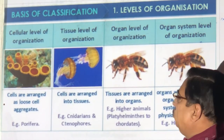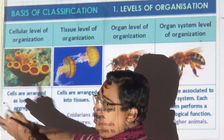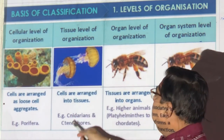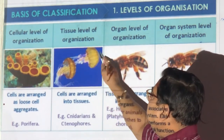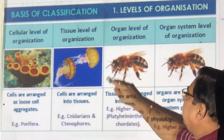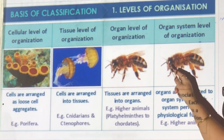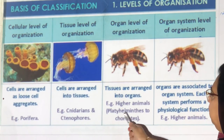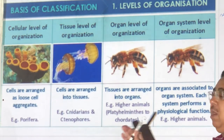At the cellular level we have sponges. At the tissue level are Hydra and jellyfish. Then we start with organs — the third level — and organ systems at the highest level. Cnidarians and ctenophores have tissue grade. From Platyhelminthes to chordates we have organ and organ system level. Below that are primitive organisms.